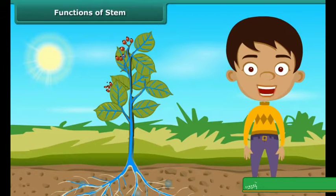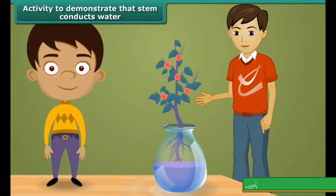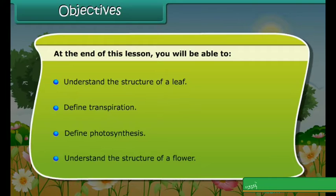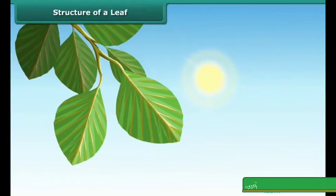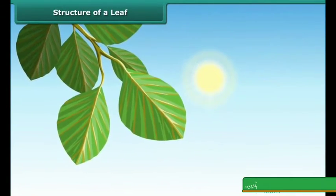Stems also provide structural support to the plant. In this chapter there will be many activities which we are going to perform in class. Our next topics are: structure of a leaf, transpiration, photosynthesis, and understanding the structure of a flower. As we all know, the leaves and the stem together form the shoot.